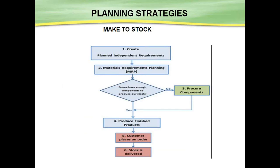Now for Make to Stock: the first step is to create Planned Independent Requirements. This means we have fixed a target quantity based on our market survey — the tentative figure we expect to sell in coming months. Based on these Planned Independent Requirements, Material Requirement Planning is run. If we have enough components in stock, we start producing. If we don't, we go and procure the components from the market.